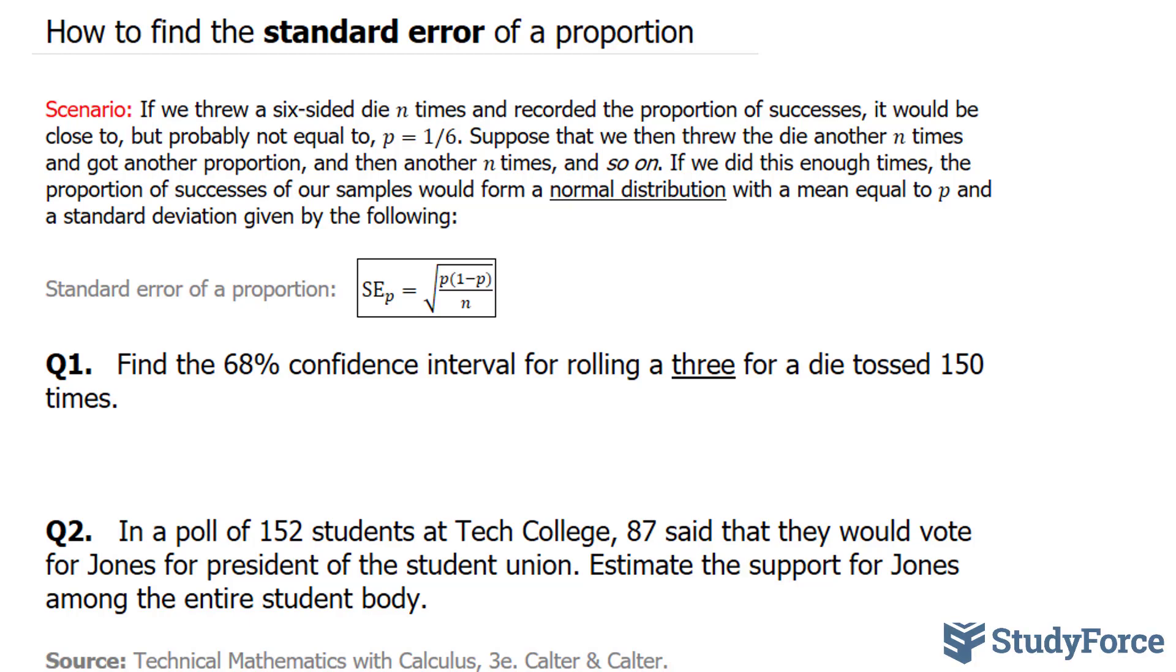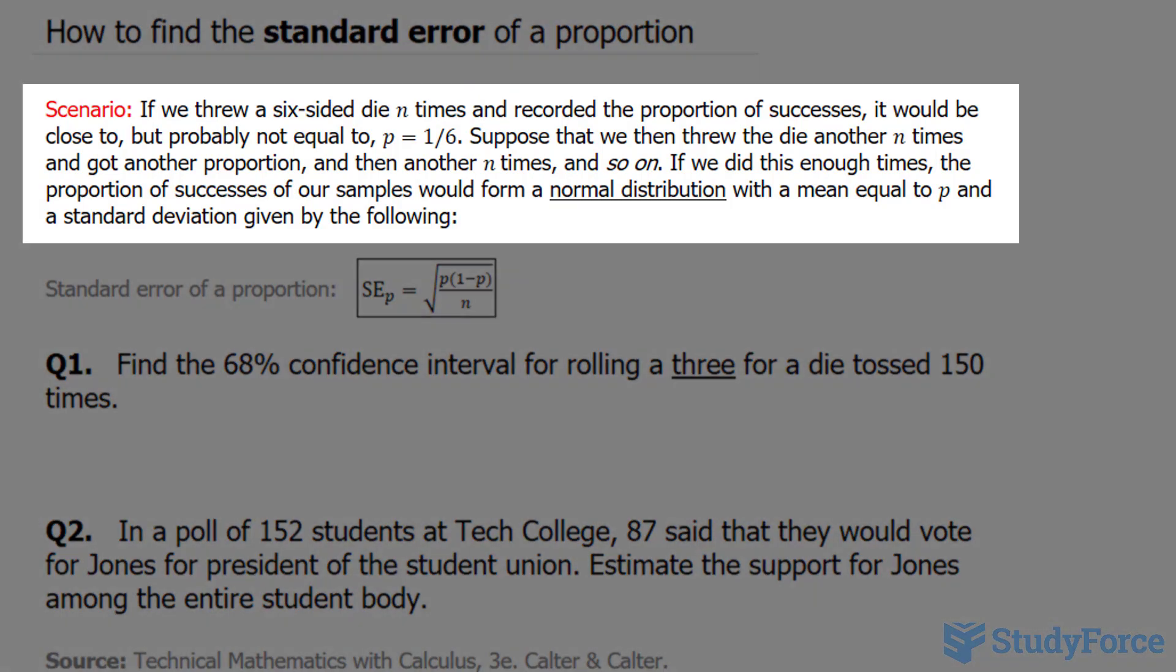I want to start off with a quick scenario as to why we would want to do this. If we threw a six-sided die n times and recorded the proportion of successes, it would be close to but probably not equal to a perfect 1 over 6. Suppose that we threw the die another n times and got another proportion, and then another n times and so on. If we did this enough times, the proportion of successes of our samples would form a normal distribution with a mean equal to p and a standard deviation given by the following.